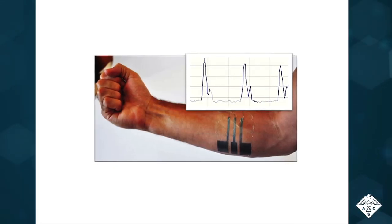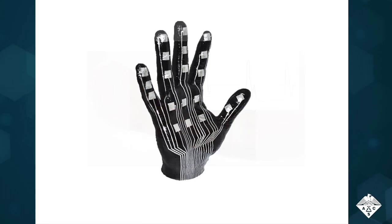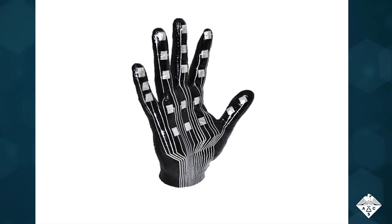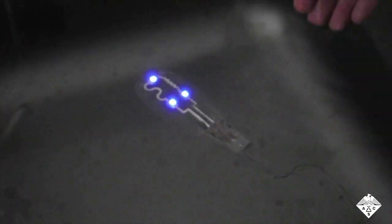The researchers used an electronic tattoo to monitor human skeletal muscle activity and placed proximity sensors into a 3D model of a hand. The circuits worked even after being immersed in water, as shown for this circuit with LEDs.